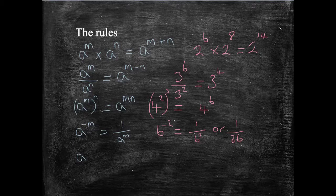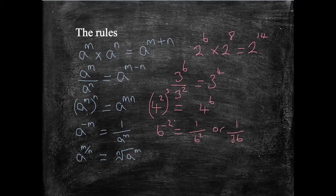A to the M over N, so some sort of fraction here, would give the nth root of A to the power M. And again, if I give you an example, let's have 8 to the power of 2 thirds. That would be the same as the cubed root of 8 squared. The cubed root of 8 is 2, 2 squared is 4. If we were evaluating it, we'd get 4.